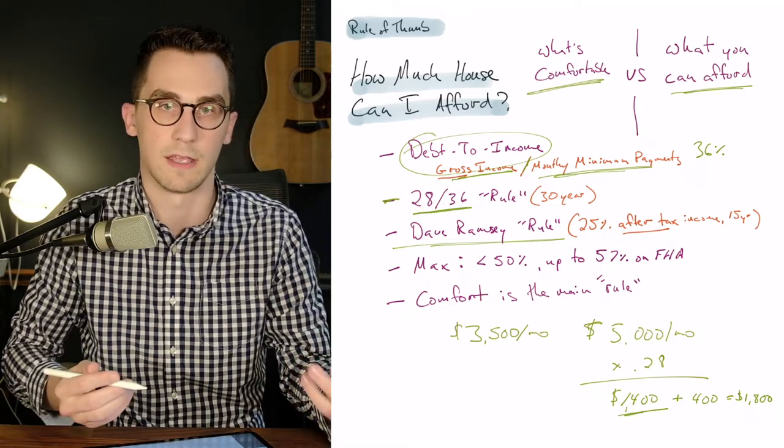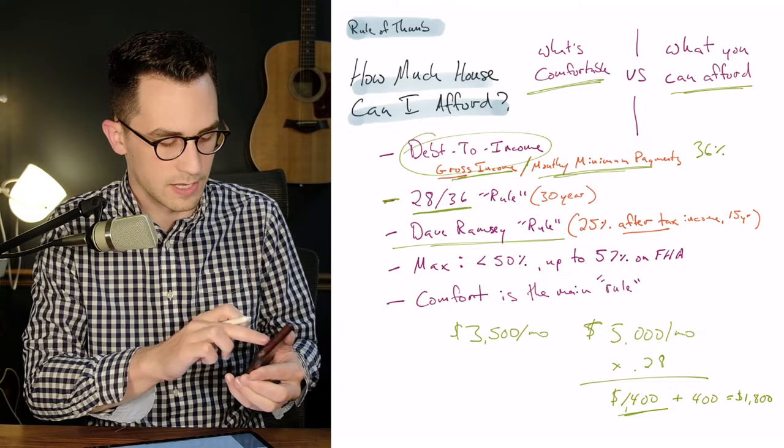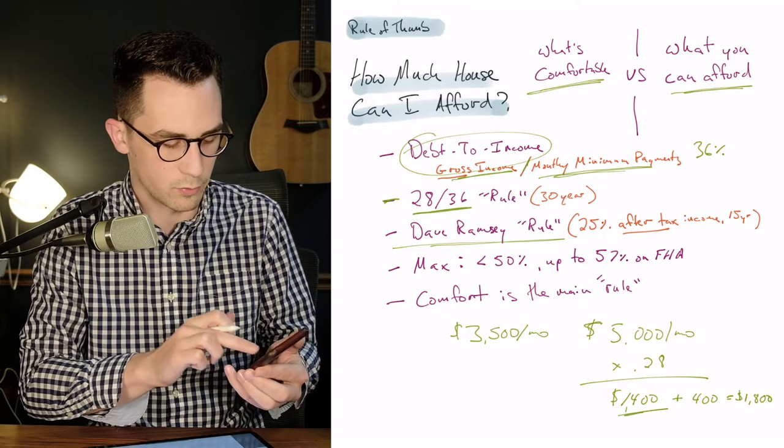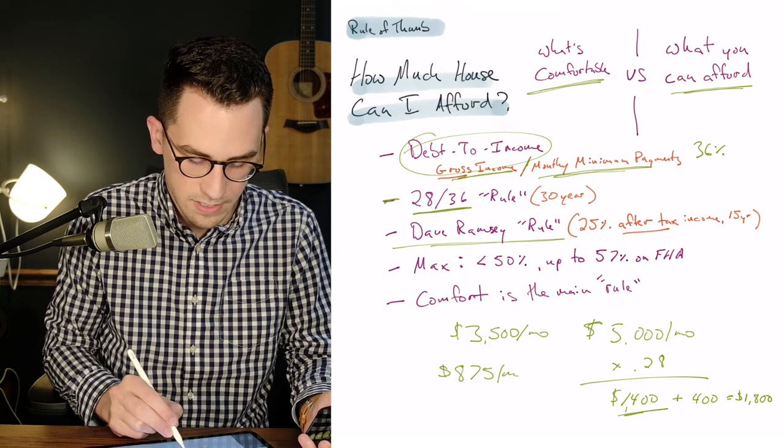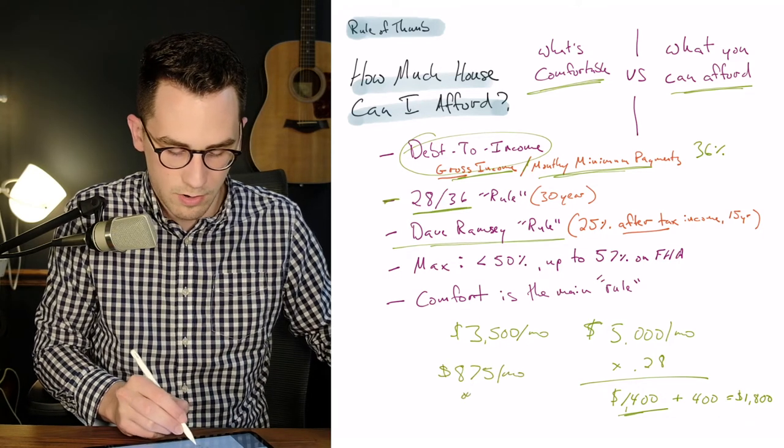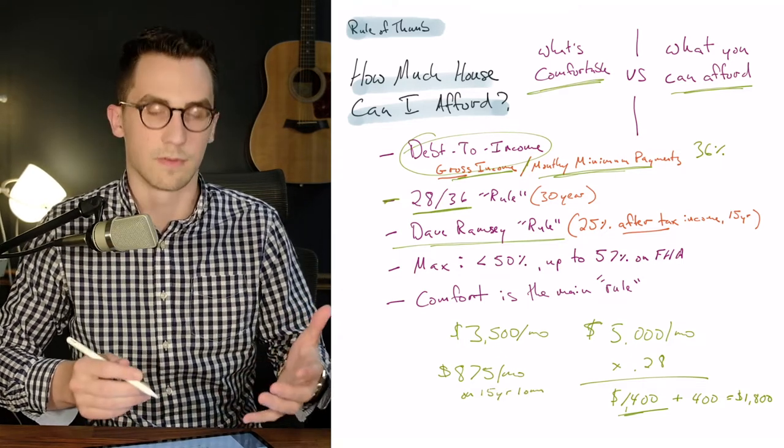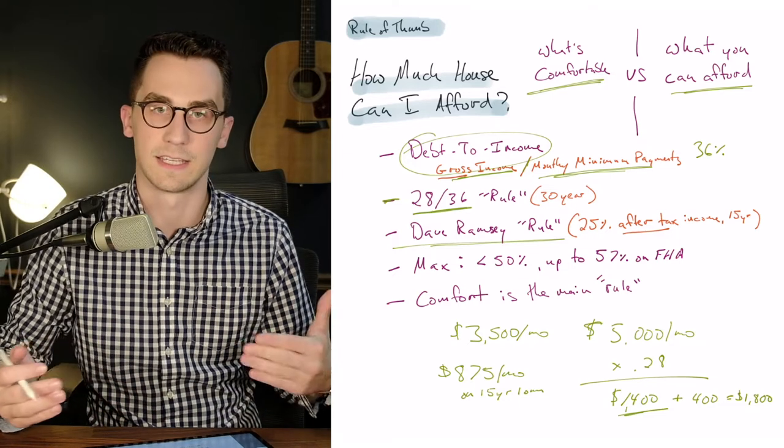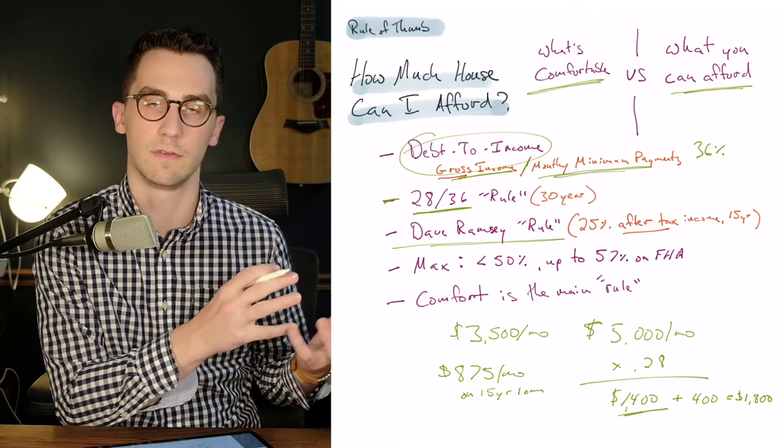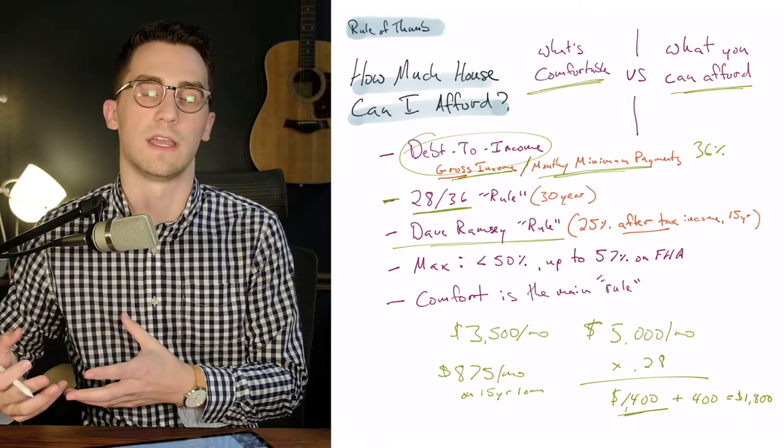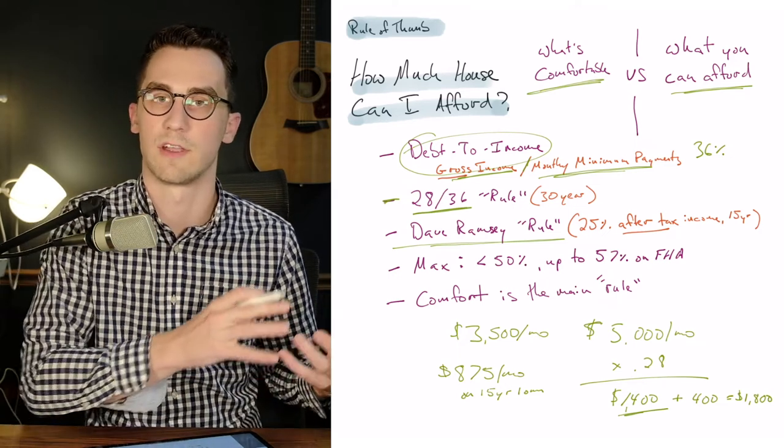So after taxes, you get paid $3,500 a month. What Dave Ramsey would say is you take $3,500 times 0.25. That gives you $875 a month that you're allowed to spend max, and this would be on a 15 year loan. So that's a drastic difference in affordability. You have on one side Dave Ramsey being super conservative, and then you have other rules like 28/36 that are a lot more lenient because over here you could do a 30 year loan, but with Dave Ramsey it's only 15 year.